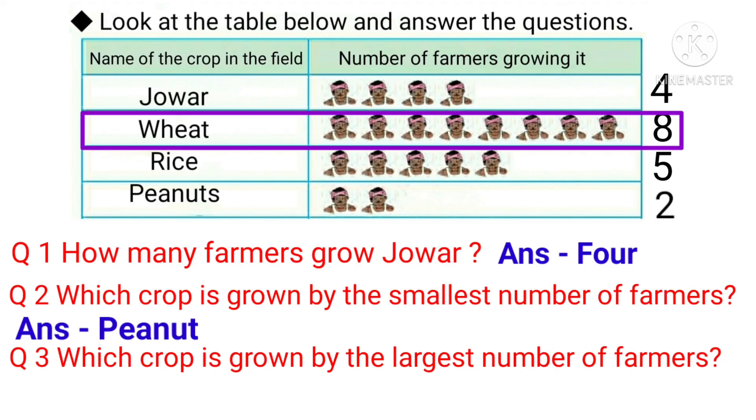So the answer is wheat. Carefully observing, we find that the highest number — 8 farmers — grow wheat, so the answer is wheat.